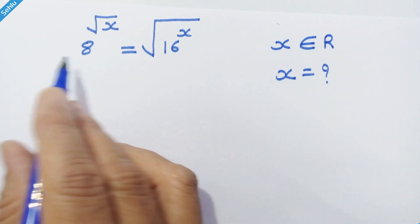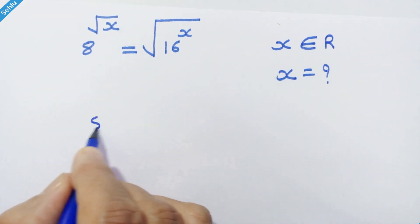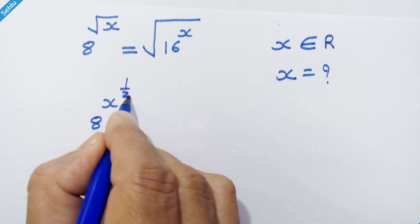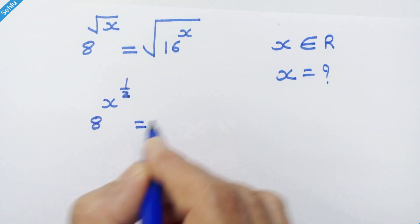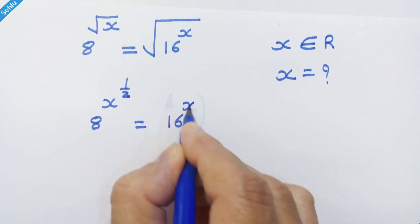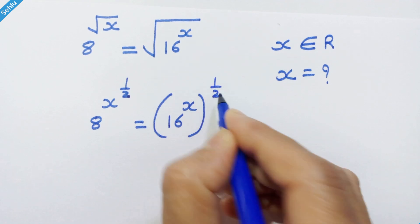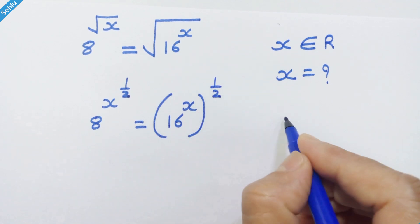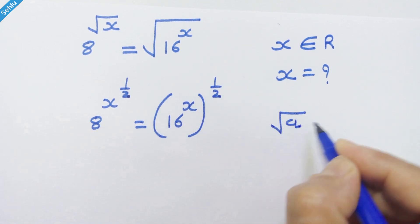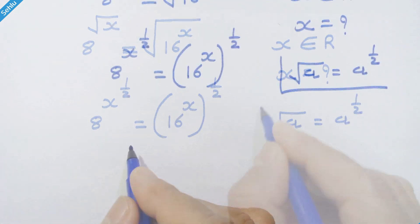Let's rewrite this as 8 raised to (x raised to 1/2) is equal to 16 raised to (x) whole raised to 1/2, because if we have the square root of a, then it can be written as a raised to 1/2.